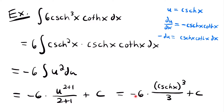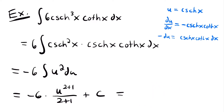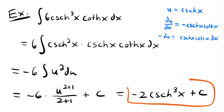Simplifying negative 6 divided by 3 gives negative 2. We can also rewrite hyperbolic cosecant x cubed in standard notation. So the final answer is negative 2 times hyperbolic cosecant cubed of x plus c, and that is the solution to this integral.